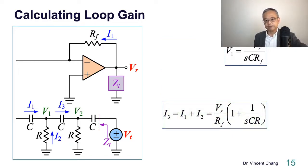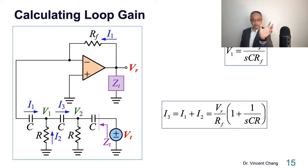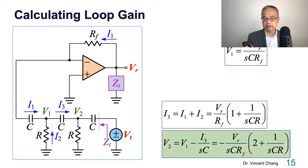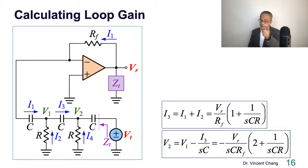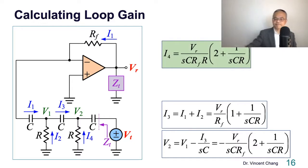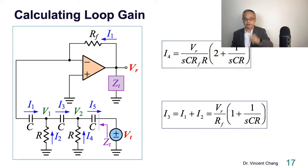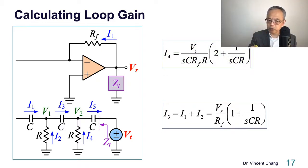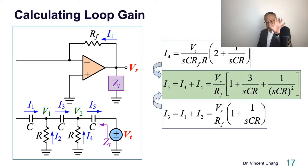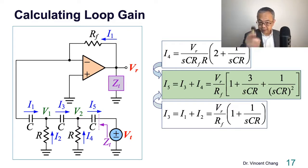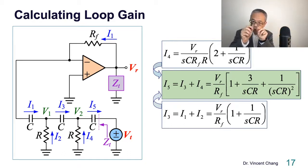Then you can solve V2: V2 equals V1 minus I3 times the capacitance impedance, which is V1 minus I3 times 1/jωC. Now with V2 you can get I4: I4 equals negative V2 divided by R. Then I3 plus I4 equals I5, with common factor VR divided by RF.